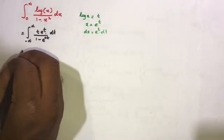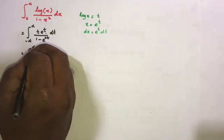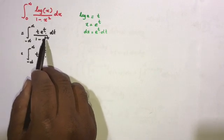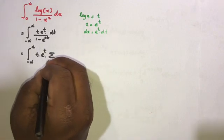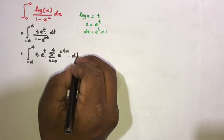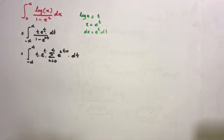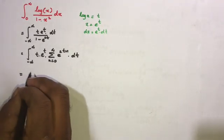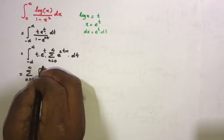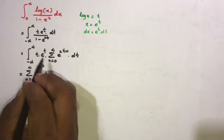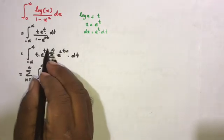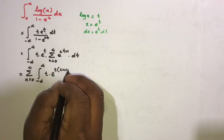Now I am going to use the series expansion for 1 over 1 minus e to the 2t, writing it as the infinite sum from n equals 0 to infinity of e to the 2nt. Then we switch the sigma notation and integral sign, giving the infinite sum from n equals 0 to infinity of the integral from minus infinity to infinity of t times e to the t times e to the 2nt dt, which simplifies to t times e to the (2n+1)t dt.